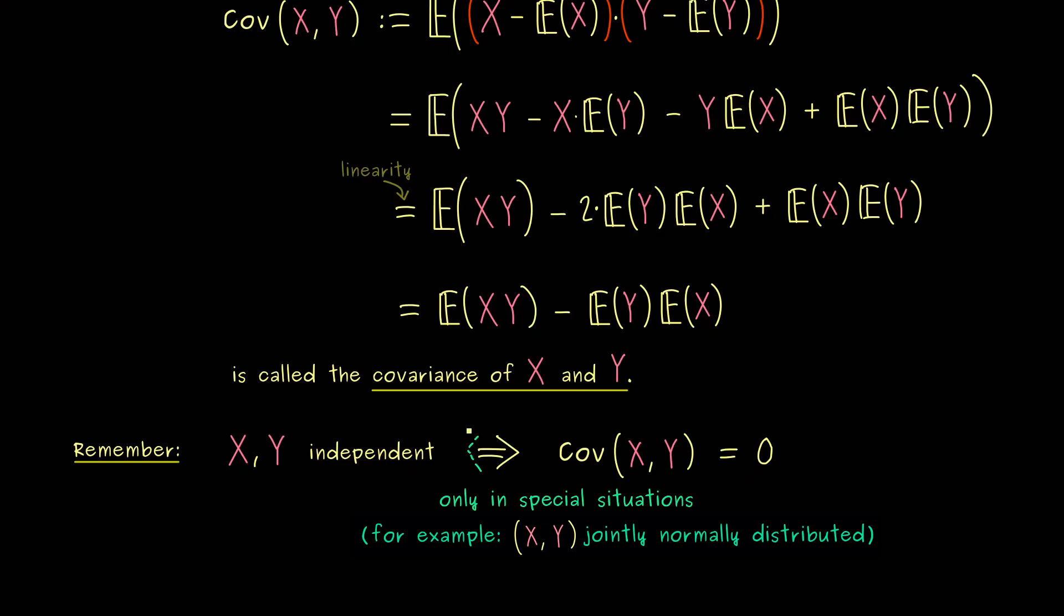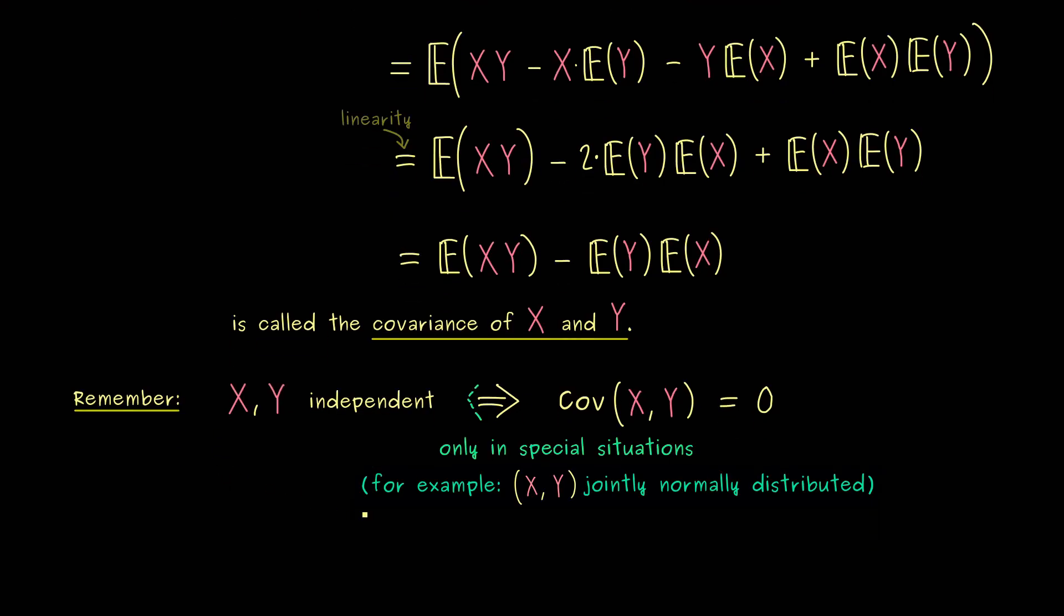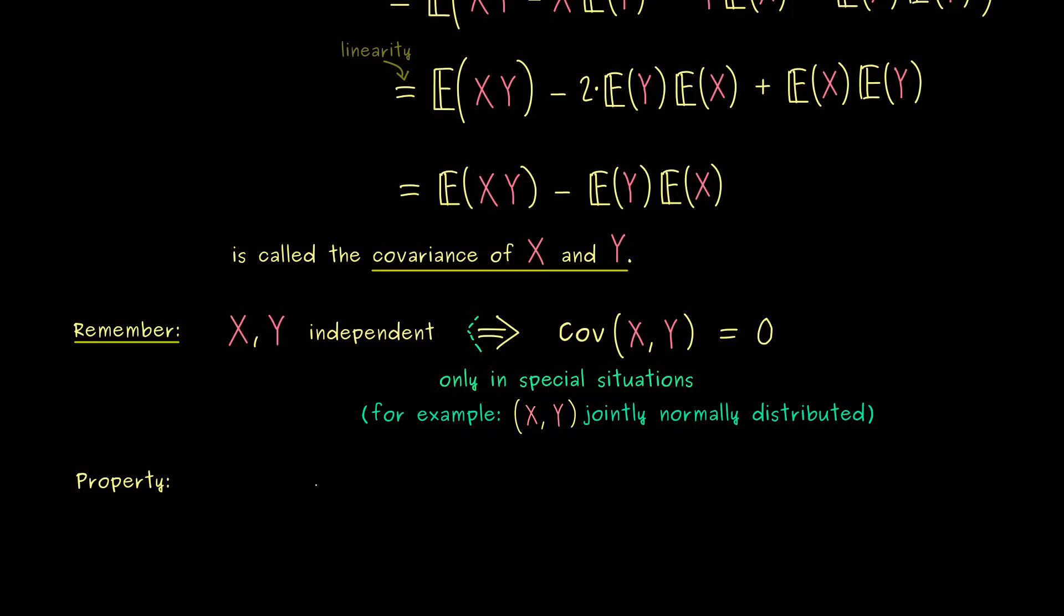However, now the question is, do we also know how much they are not independent? There, the covariance might be misleading, because X and Y for themselves could already have very big variances. Therefore, we need some kind of normalization to actually get a measurement for uncorrelated variables. Indeed, this is the definition we can put here, if the covariance is zero, X and Y are called uncorrelated. So we already know, this new notion is weaker than the notion independence.